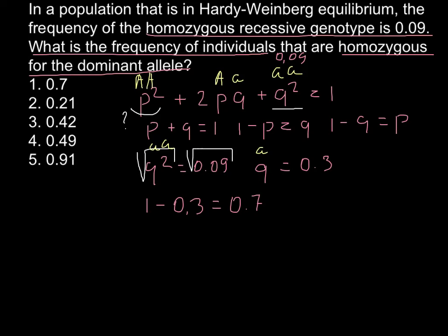In order to find P squared, because we know right now P, if we know that P is 0.7, so P squared would be 0.7 raised to the power of 2.